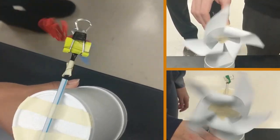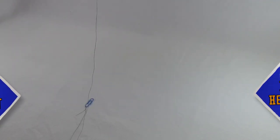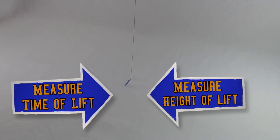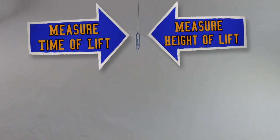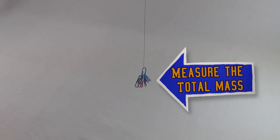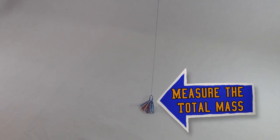Once you've found the maximum amount, measure the height it was lifted and the time it was lifted. You can measure the total mass using a scale at home, or assume that each paper clip has a mass of 0.001 kilograms.